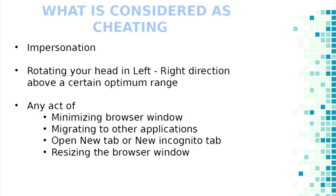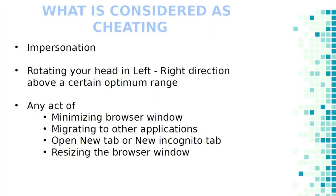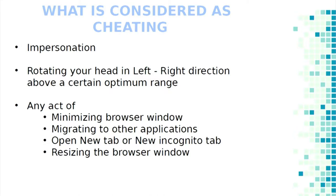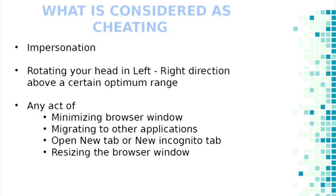The third suspicious category is web restriction violations. These include: first, minimizing the browser window — the student can minimize and access their own material; second, migrating to other applications; third, opening a new tab or incognito tab to Google answers; and fourth, resizing the browser window to place material in another window. We consider all of these cheating, and we maintain appropriate proofs and timestamps.